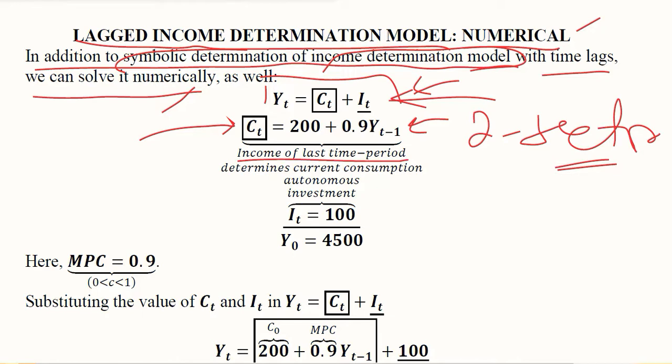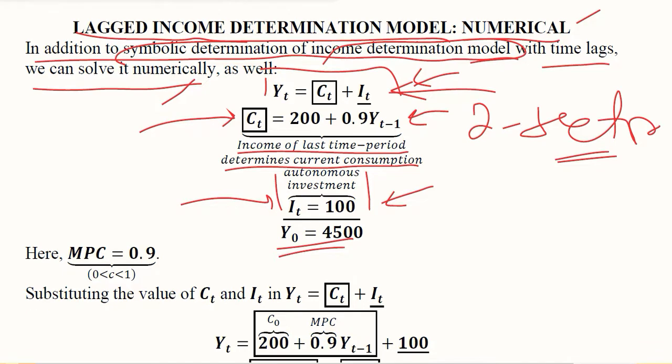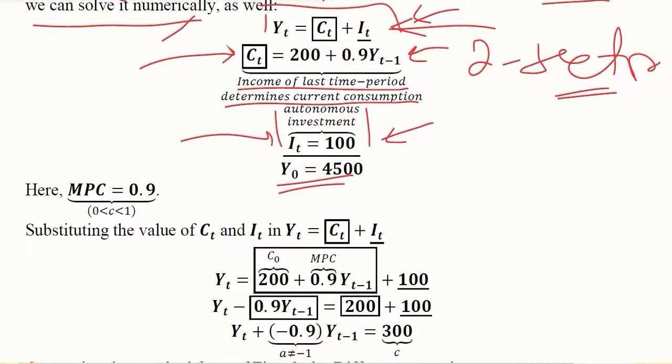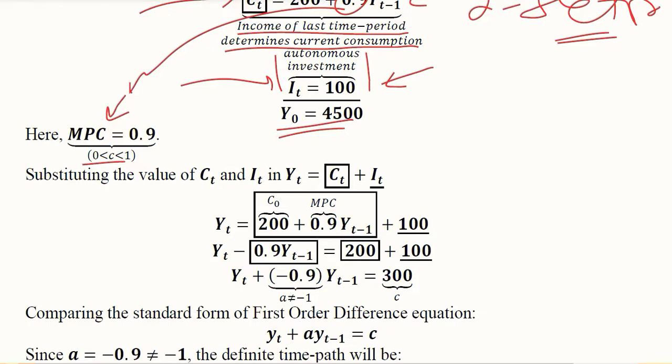Income of the last time period determines the current consumption and the investment is autonomous in nature, that is 100, doesn't depend upon income. This is the initial conditions numerical value, that is 4500. The MPC is informed here and it is 0.9, and definitely should be between 0 and 1.